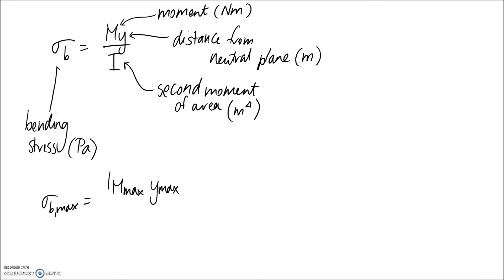In order to get a maximum on the left hand side here, we need to maximize the numerator. That means we need the maximum moment that we can possibly have and also the maximum y value, so the maximum distance that we can move away from that neutral plane. I'm going to put absolute signs around each of these values because we want to take the positive version.